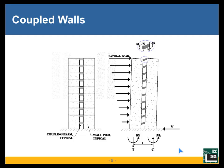A coupled shear wall is typically two walls connected at every floor level by beams. There can be more than two walls and more than one set of beams, but let's talk about two walls connected by one set of beams. The beams are at every floor level and they are typically above the door and window openings.